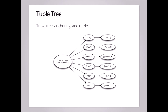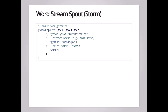So in this example, we start with a sentence. That sentence might move through some bolts that do word splitting. Those words might actually be counted, and the final tuple is a word and the current count for that word. Storm can efficiently know that if a bolt, while trying to count the word 'cow', falls over, it needs to replay the sentence where that word came from, as well as any other sentences that contributed to that count. I'm going to show you a couple of code examples and then jump into the command line to show you the project we built that makes deploying Storm topologies really easy with Python.